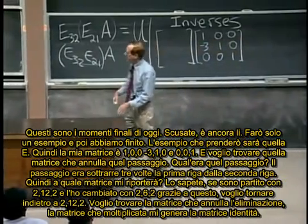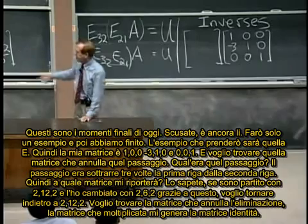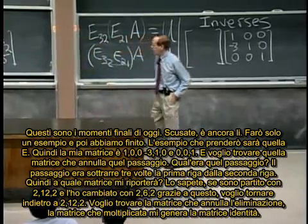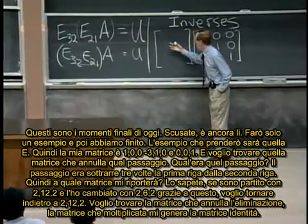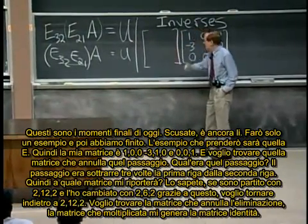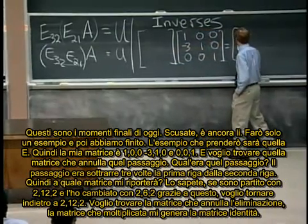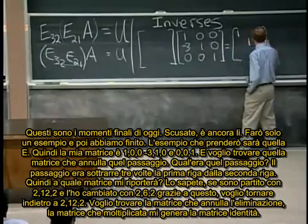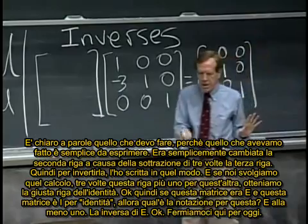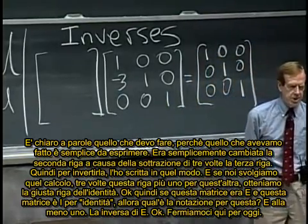if I started with a 2-12-2 and it changed it to a 2-6-2 because of this guy, I want to get back to the 2-12-2. I want to take, I want to find the matrix which undoes elimination, the matrix which multiplies this to give the identity. And you can tell me what I should do in words first and then we'll write down the matrix that